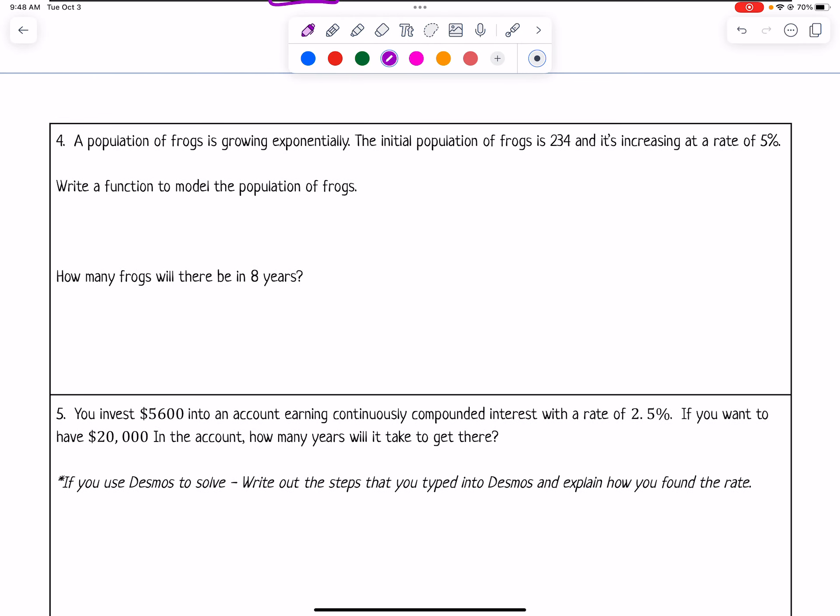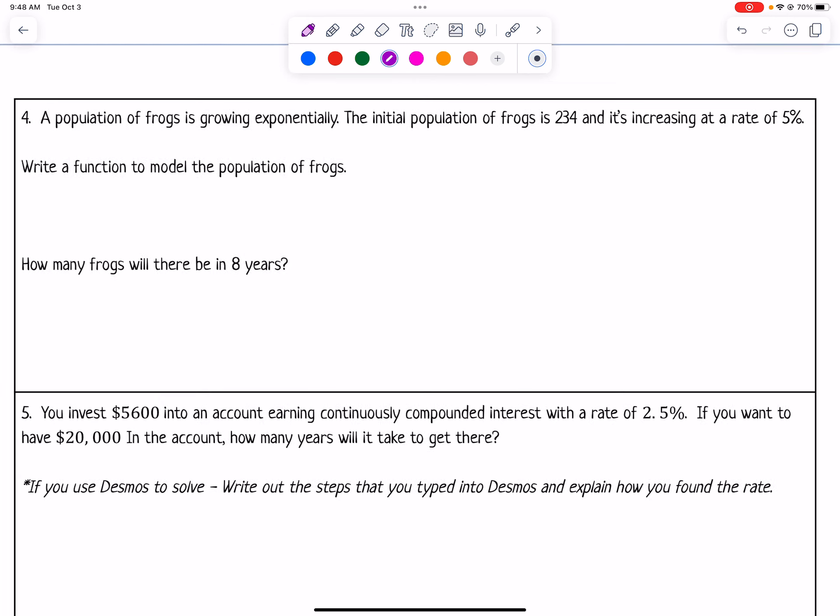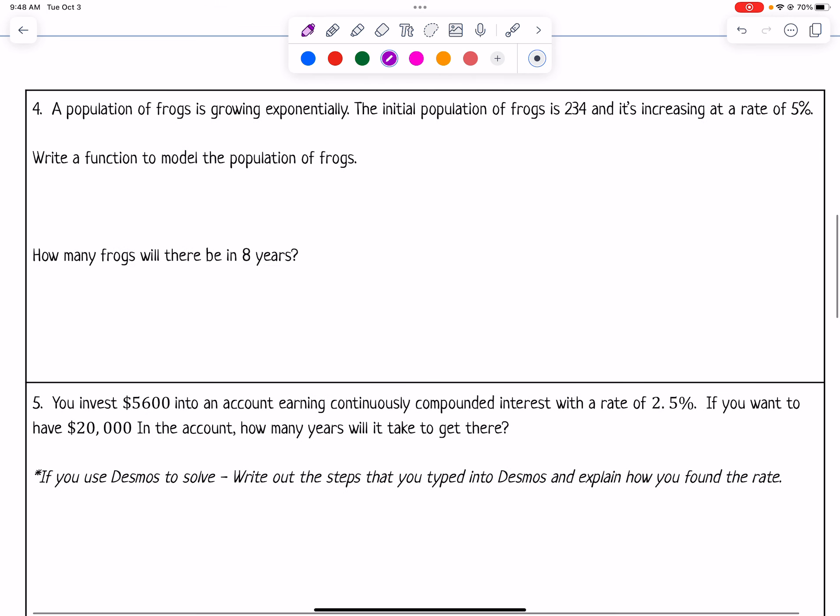Number 4 says a population of frogs is growing exponentially. The initial population is 234 and it's increasing at a rate of 5%. Write a function to model the population. If it's growing exponentially, I want to use the growth model: A = P(1 + r)^t. So that would be A = 234(1 + 0.05)^t. I need to make it into a decimal, so that would be 0.05 for 5%. You can do that by moving the decimal over two places to the left or by dividing 5 by 100.